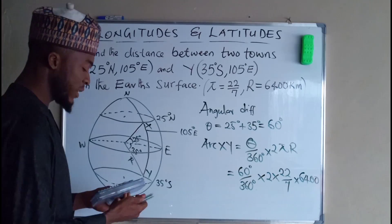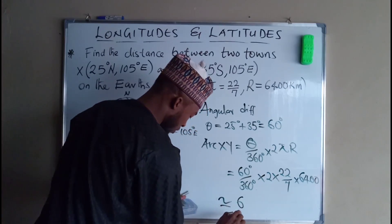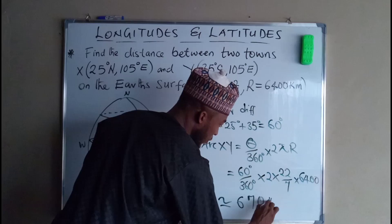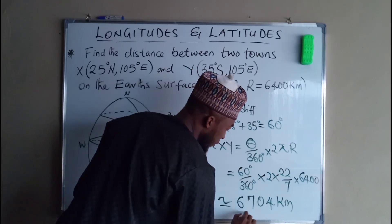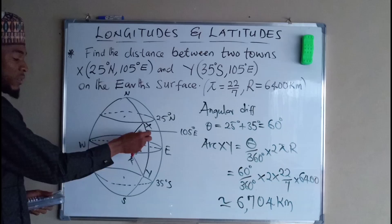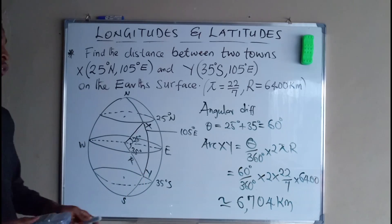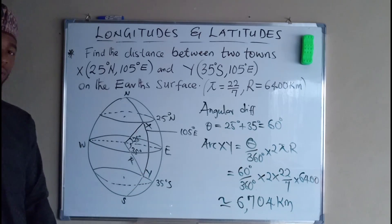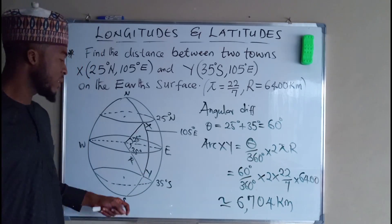And this is approximately equal to 6704 kilometers. Therefore the distance between these two towns X and Y is approximately equal to 6704 kilometers.